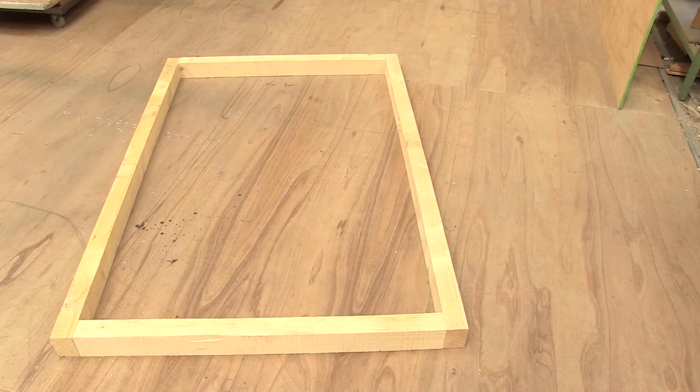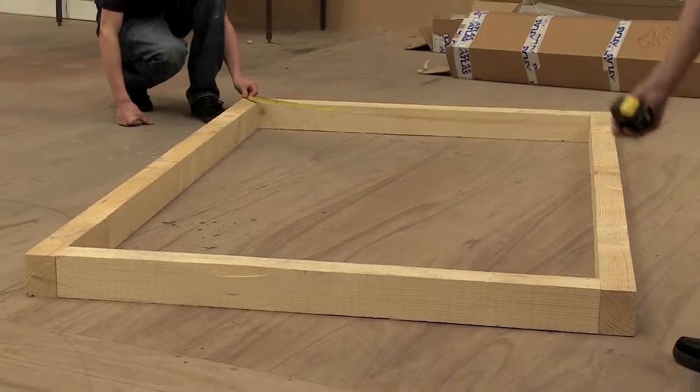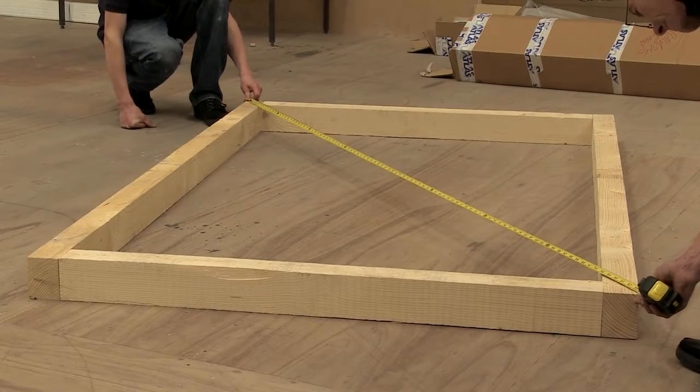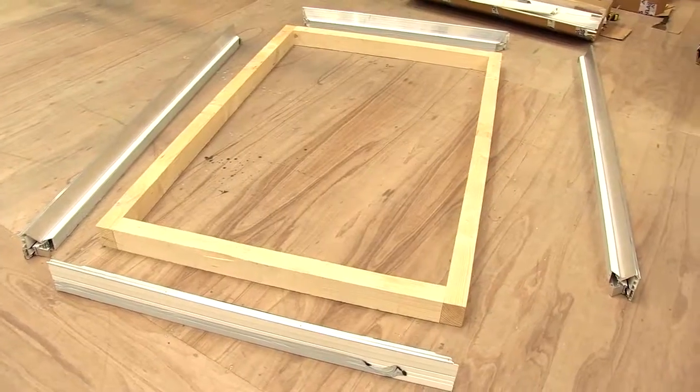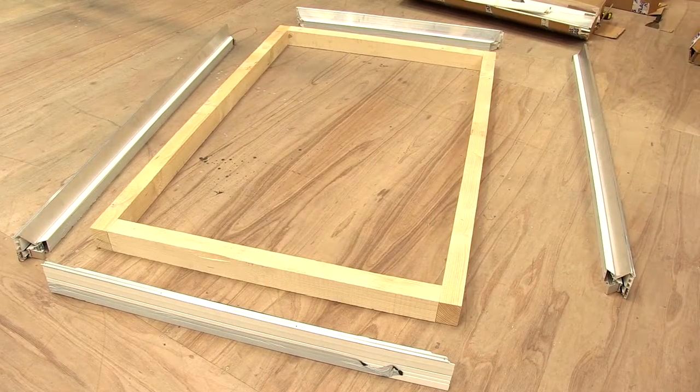A lantern curb upstand is built onto the flat roof. Check that the kerb is square by measuring equal distances from corner to corner. Lay out the ring beams to the correct side of the kerbs.